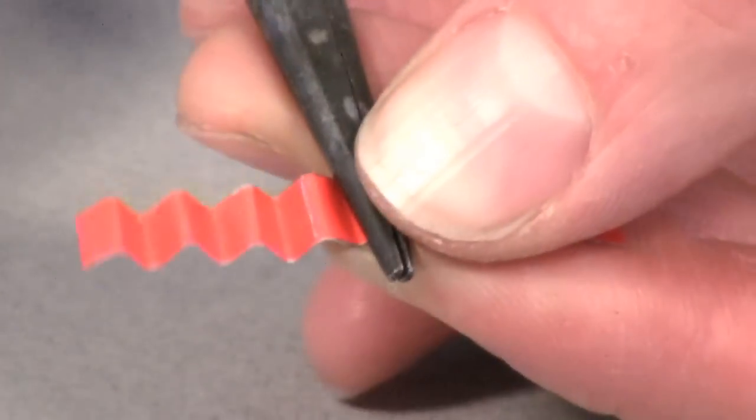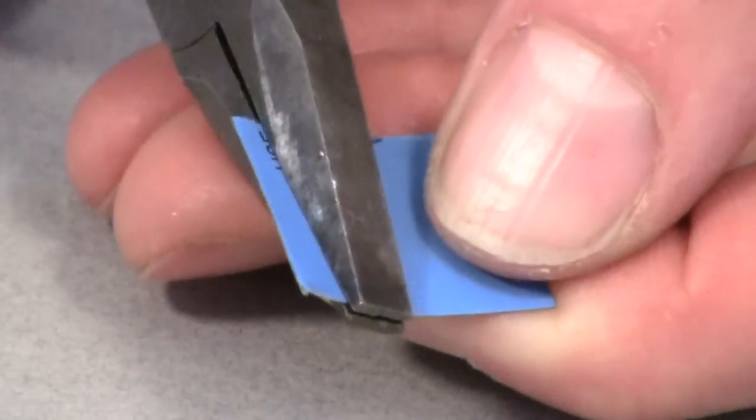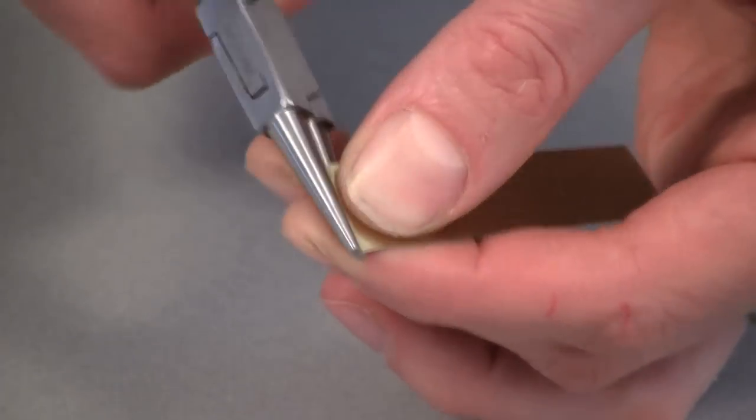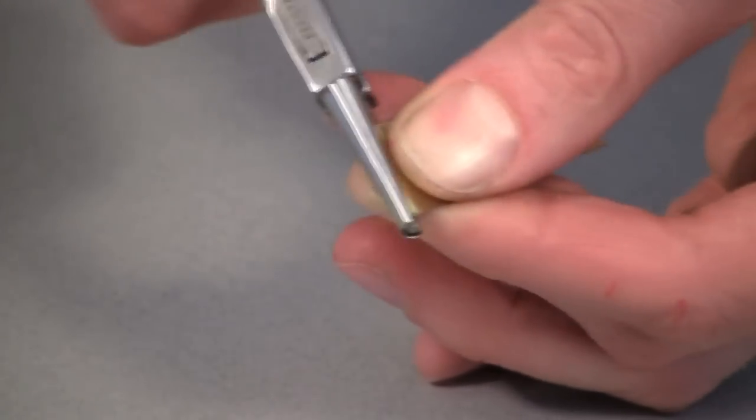Needle nose pliers are generally used when clearances are tight. Flat nose pliers are good for general bending. Round nose pliers are useful for making curved bends and small cylinders and cones.